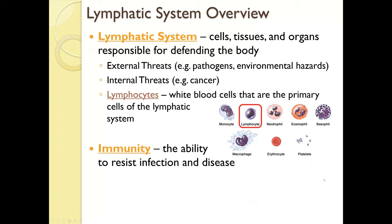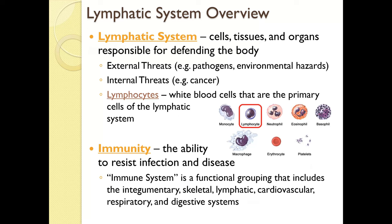Immunity is defined as the ability to resist infection and disease. The immune system is actually a functional grouping — it's not specific structures dedicated only to immune function, but rather a group of structures found throughout other systems like the integumentary, skeletal, lymphatic, cardiovascular, respiratory, and even digestive system. We typically discuss immunity when covering the lymphatic system because the lymphatic system contains the highest concentration of our immune cells.